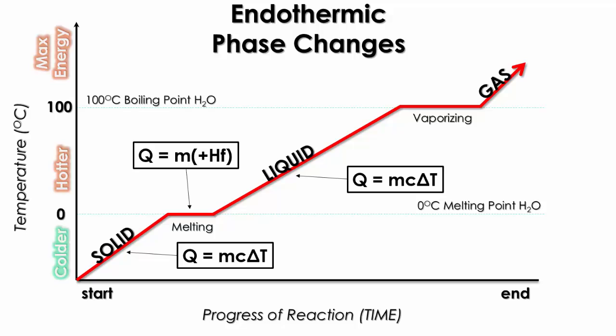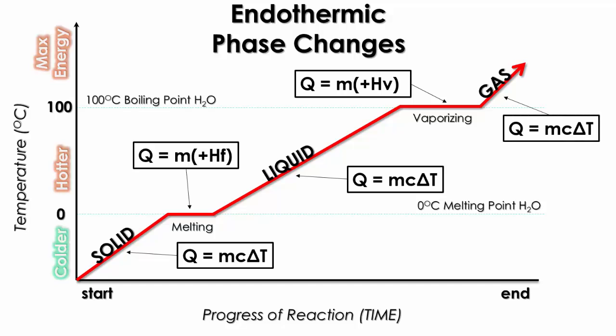When we get to the last phase change, we're going to be using the Q = MHV formula. And finally we get to the gas phase, where the gas sample can increase in temperature up to whatever point the scientist, chemist, or problem puts it to.